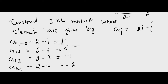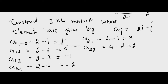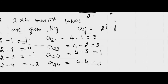Next, A21 equals 4 minus 1 which is 3. A22 equals 4 minus 2 which is 2. A23 equals 4 minus 3 which is 1. A24 equals 4 minus 4 which is 0.